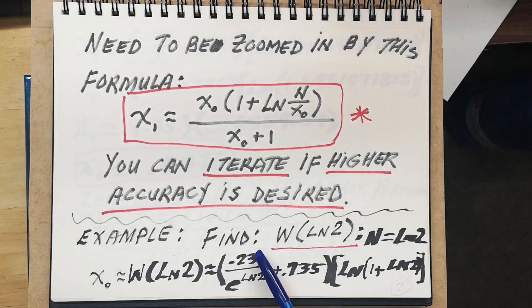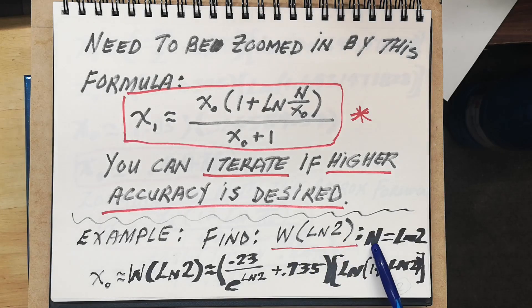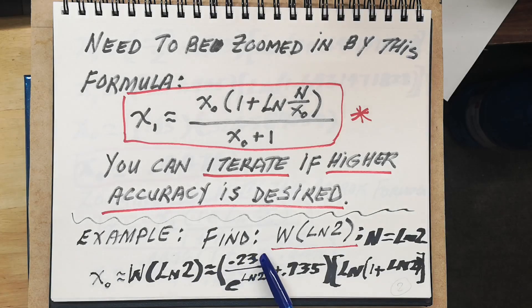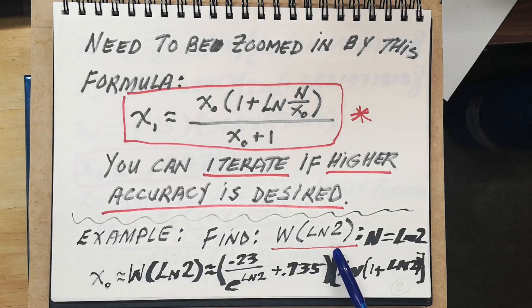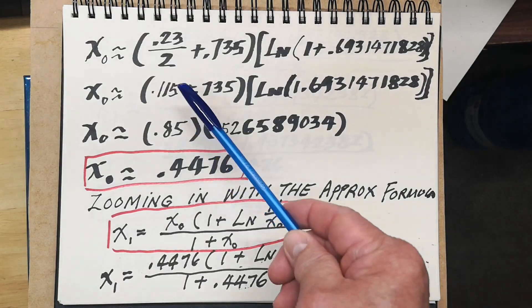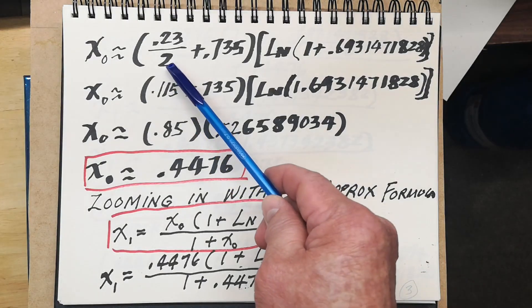Example: find W(ln 2). That means n equals ln 2. So x₀ is approximately equal to 0.23 divided by e raised to the ln of 2, plus 0.735, quantity multiplied by ln of (1 + ln 2). We know that e raised to the ln of 2 is also equal to 2.